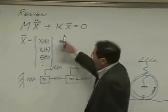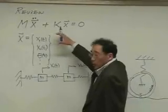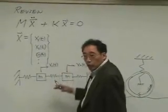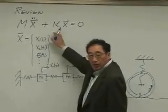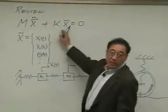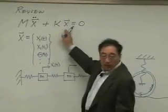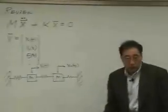But anyway, no matter what kind of coordinate you are using, we can always end up with the equation look like this, m matrix x double dot plus kx equal to 0.